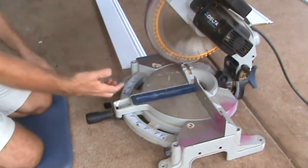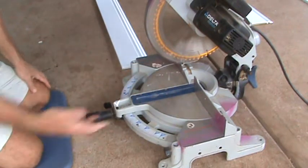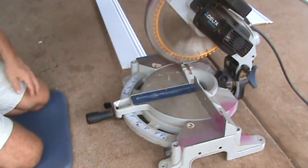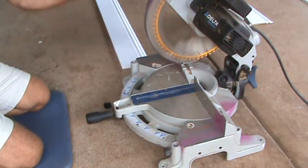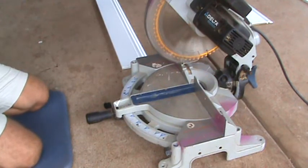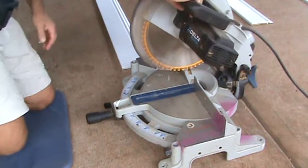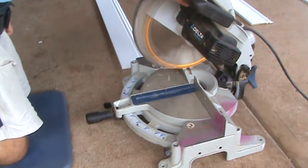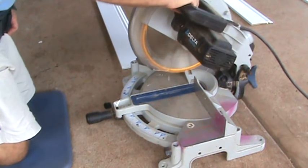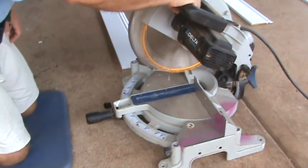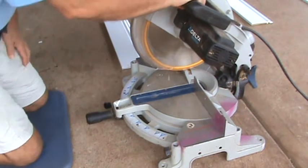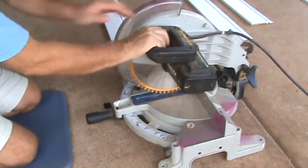Last thing I want to do is start cutting thinking that the saw is going to work one way and it doesn't. I lift up on it and it doesn't have a lock back on the blade or something and it nicks my finger as I let go or something.